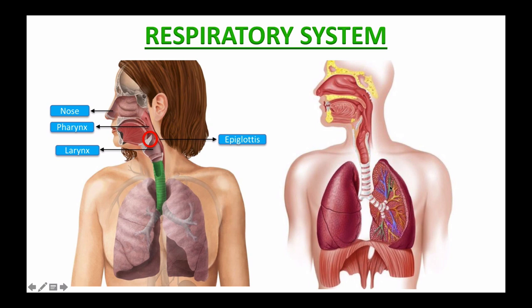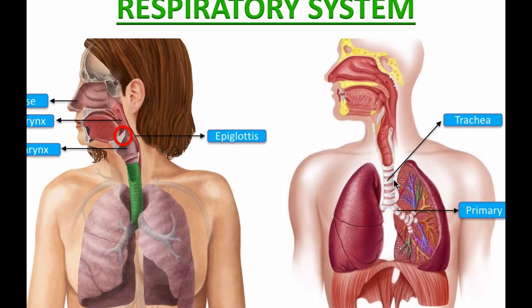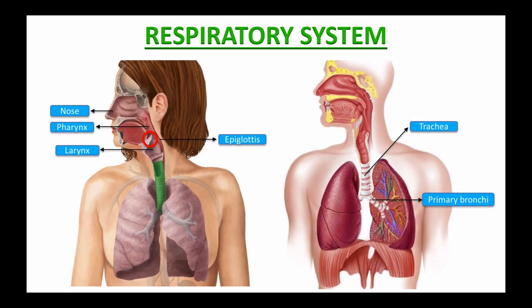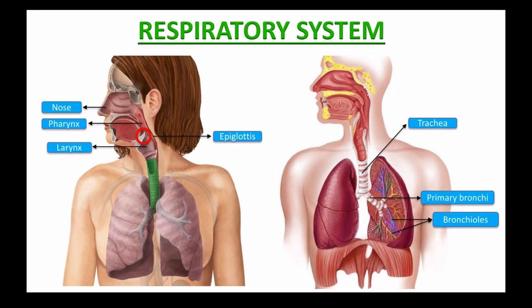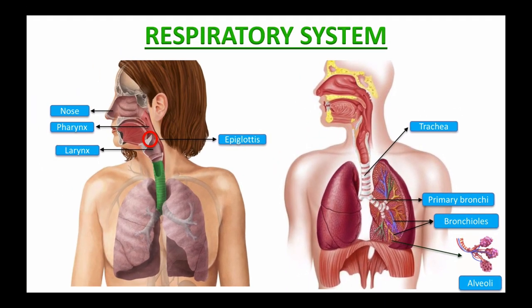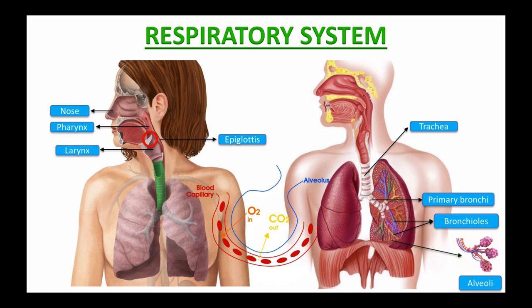Next, the lower respiratory tract, located within the chest, contains the trachea or windpipe, which descends and divides into two main or primary bronchi — one to the right and one to the left. From here, it branches into smaller bronchioles, and the bronchioles end in tiny air sacs called alveoli. This is where gas exchange takes place. Inhaled oxygen moves from the alveoli to the blood in the capillaries, and carbon dioxide moves from the blood in the capillaries to the air in the alveoli.